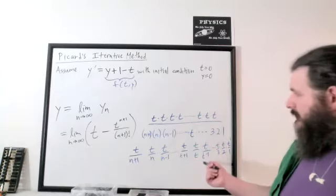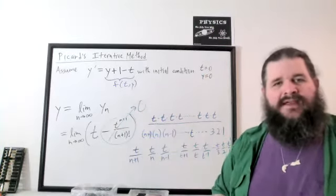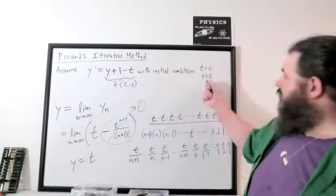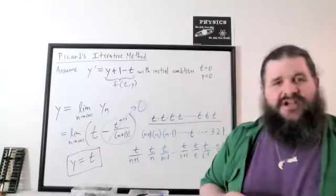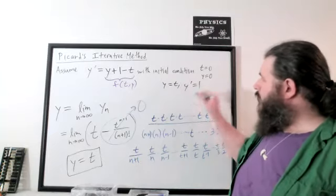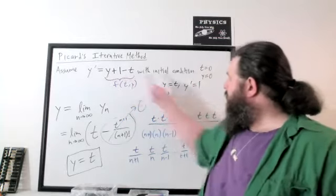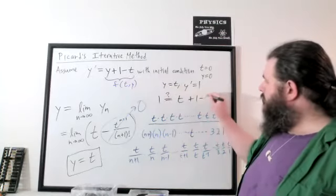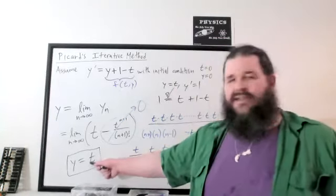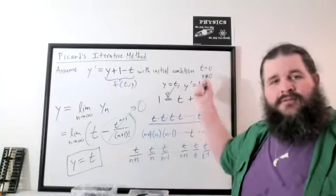So this whole thing — t to the n plus one over n plus one factorial — goes to zero as n approaches infinity. All that's left is y equals t. That should be the actual specific solution based on this initial condition. We can check: if y is t, then y prime is one. Plugging in: one equals t plus one minus t. That's true. And at t equals zero, y equals zero, confirming this is the specific solution passing through the initial condition.